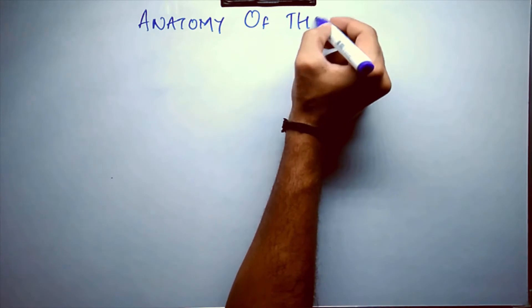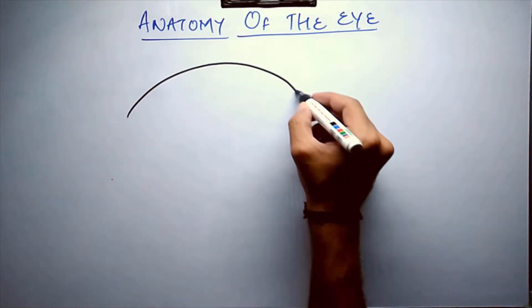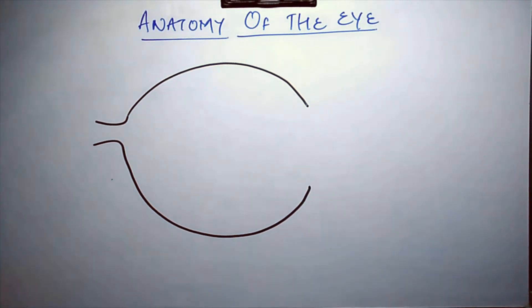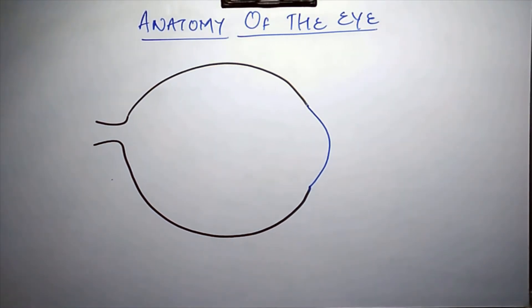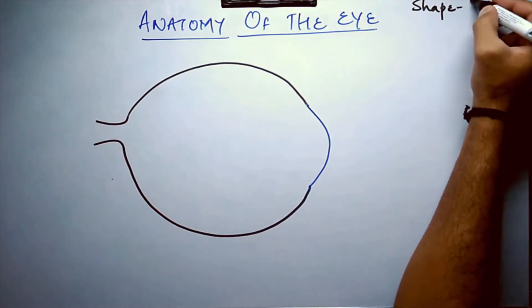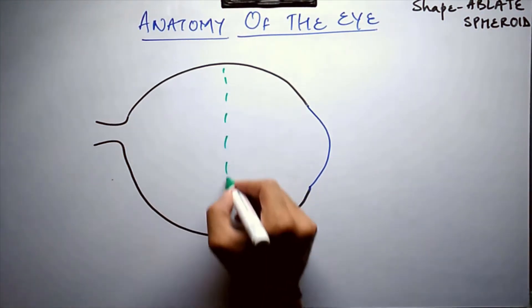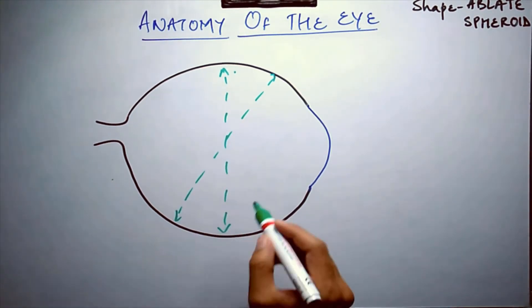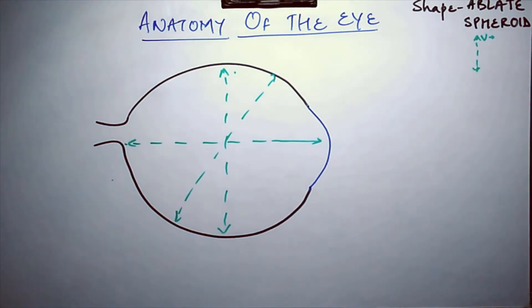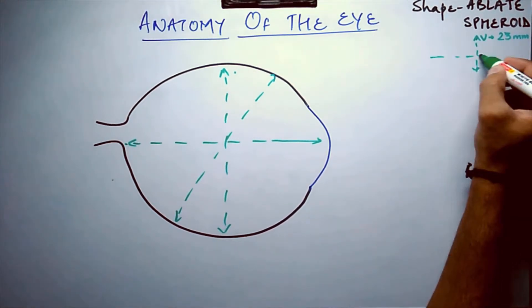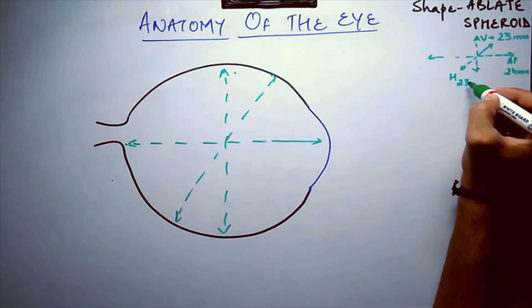Today we are going to discuss the anatomy of the eye. The eye is considered to be a spheroid structure but is not completely spherical because the diameters are not equal. The shape of the eye is better known as an oblate spheroid. The vertical diameter is around 23 mm, the anteroposterior diameter is nearly 24 mm, and the horizontal diameter of the eyeball is 23.5 mm.